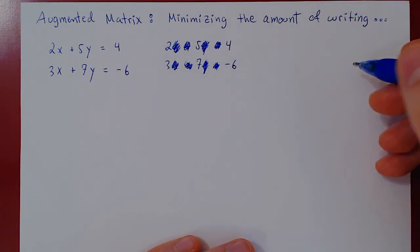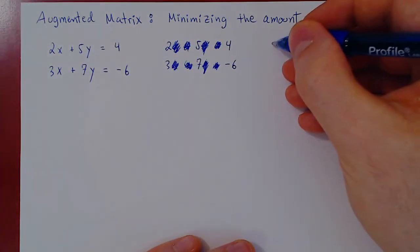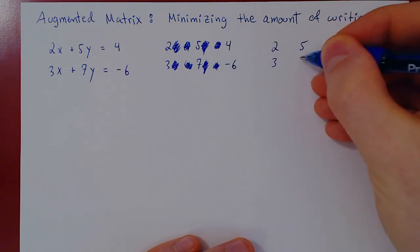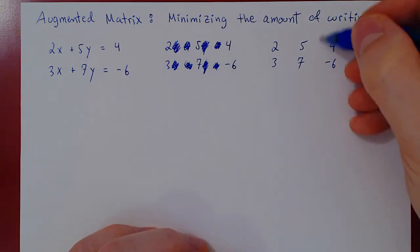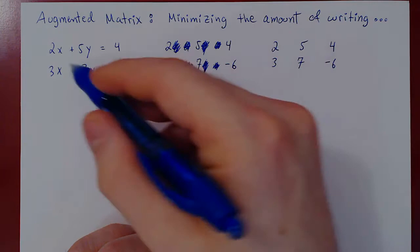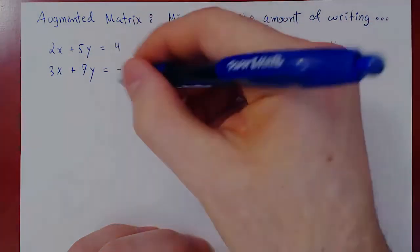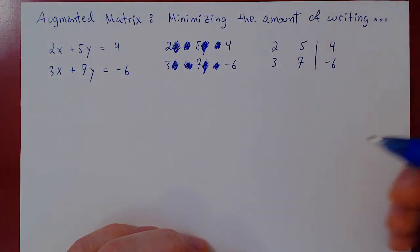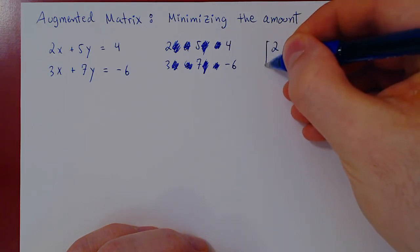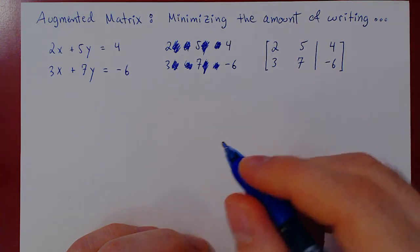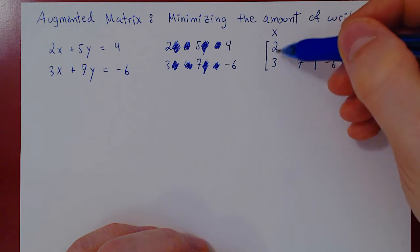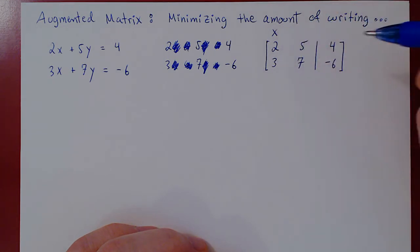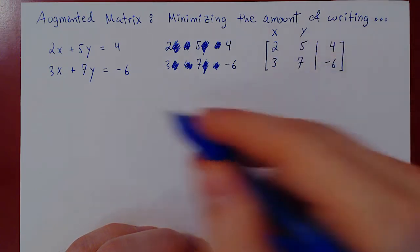All we really need to write down are the coefficients and the constant terms. This is what we call the augmented matrix of the linear system. We have our coefficients 2, 5, 3, and 7, and our constant terms 4 and negative 6. We add a vertical bar to separate the coefficients from the constant terms — replacing the equal sign. We add square brackets on the left and right, and write x and y on top to remind ourselves which column corresponds to which variable.